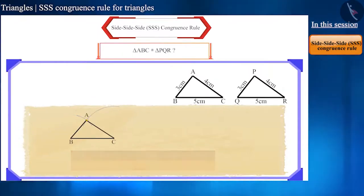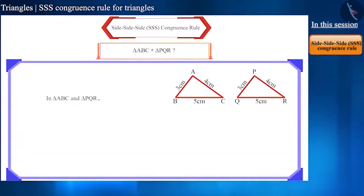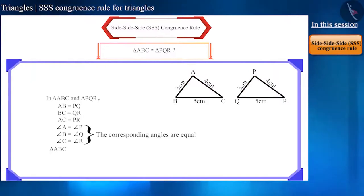Similarly, we will draw triangle PQR. Now, cut the triangles and keep similar sides one on top of the other. Here, you can see that these two triangles cover each other completely. This means the corresponding parts of these triangles are equal. That's why triangle ABC and triangle PQR are congruent.